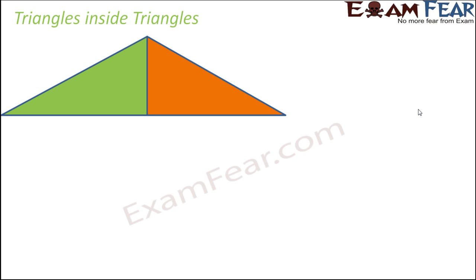In this diagram, what do you see? Overall, this is nothing but a triangle. Let's name it — let's call this triangle ABC. Now, let's call this point D. What is ABD? This is also a triangle. What is ADC? That is also a triangle. So basically, here we see that triangle ABD, the green one, and triangle ADC, the orange one — these two triangles are present inside triangle ABC. This is a scenario where we find triangles inside triangles.